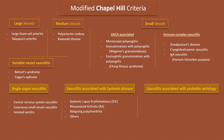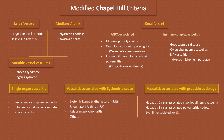The last category is vasculitis associated with probable etiology. Some vasculitides are associated with a specific etiology and the diagnosis should have a prefix specifying the underlying cause. Examples include hepatitis C virus-associated cryoglobulinemic vasculitis, hepatitis B virus-associated polyarteritis nodosa, syphilis-associated aortitis, hydralazine-associated ANCA-associated vasculitis, and cancer-associated vasculitis — in which hematologic and solid organ neoplasms as well as clonal B cell lymphoproliferative disorders can be associated with vasculitis.